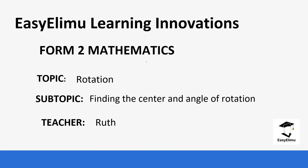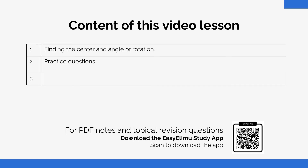Welcome to EZLE Learning Simplified. My name is Ruth and today we are going to be studying quantum mathematics and our topic for today is rotation. Our subtopic is finding the center and the angle of rotation. Our main focus today is: when you're given an object and an image and you do not have the center of rotation nor the angle of rotation, how are you able to get them?